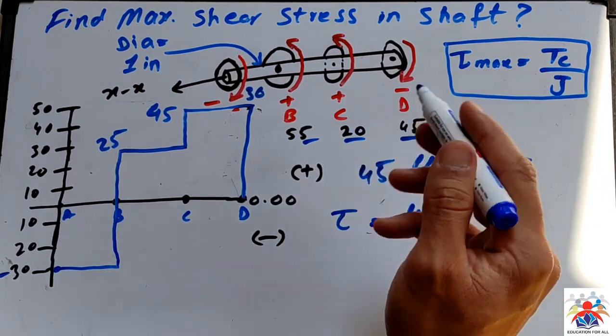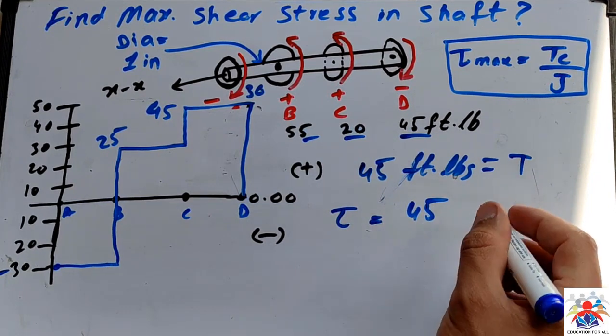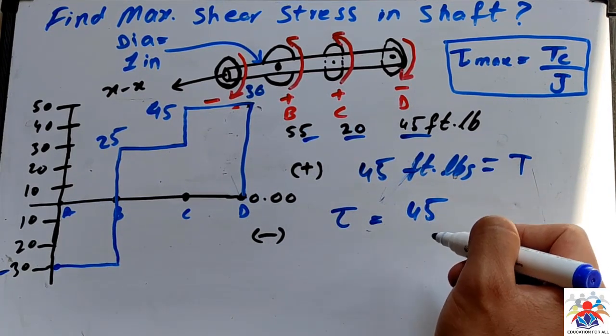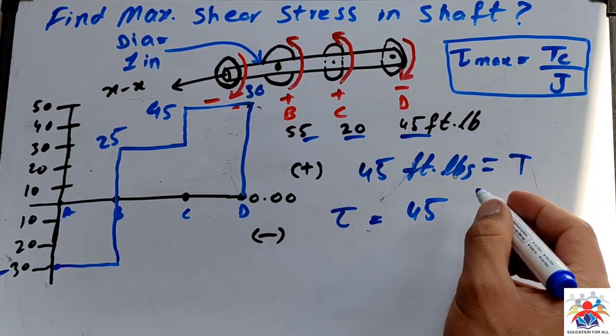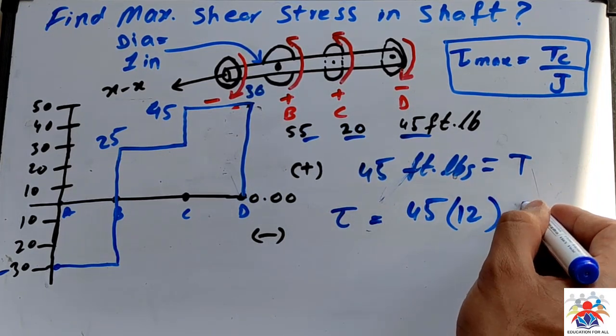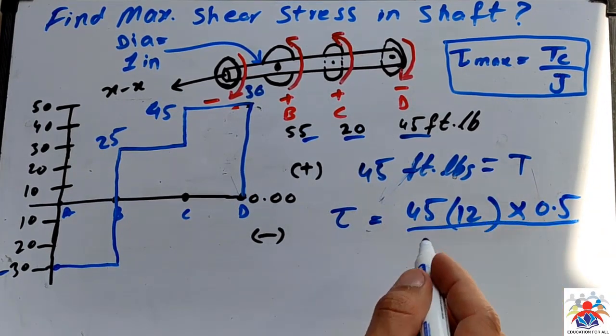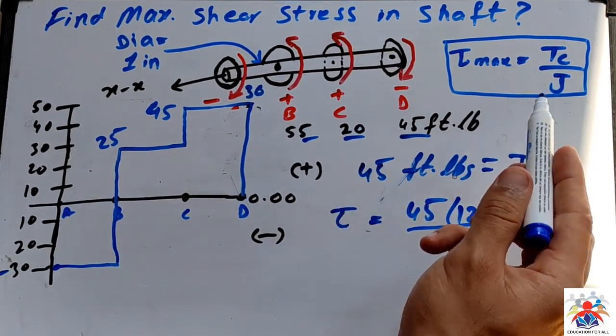Tc is 45. C is basically the radius of the shaft. We have a diameter of shaft is 1 inch and c is the radius of that shaft, which is 0.5 inch. So of course this is in inches, we will calculate into feet, and then I will multiply by 12, then multiply by c which is 0.5, divided by J.